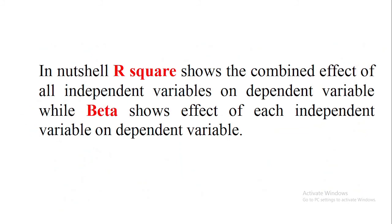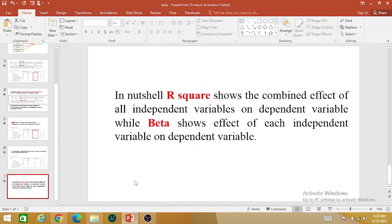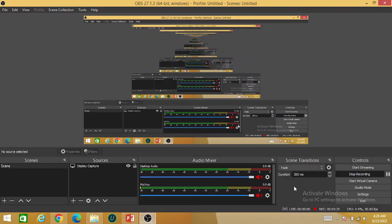In nutshell, R-squared shows the combined effect of all independent variables on the dependent variable, while beta shows the effect of each individual independent variable on the dependent variable. This is the difference between R-squared and beta in regression analysis. Thank you.